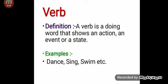Verb. Let's see its definition. A verb is a doing word that shows an action, an event, or a state. It is a word that is used to indicate that something happens or exists. Let's see some examples.